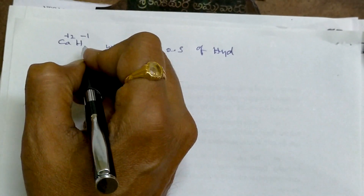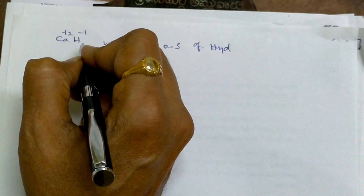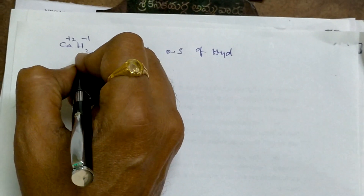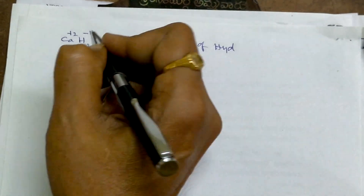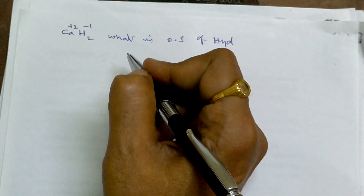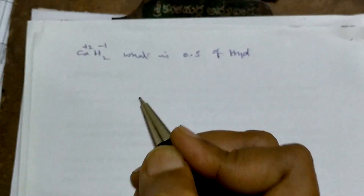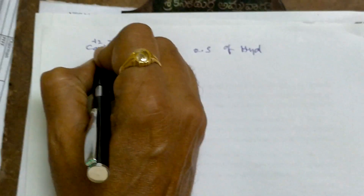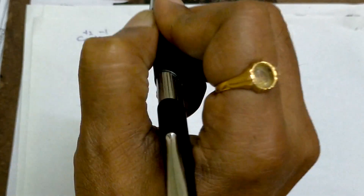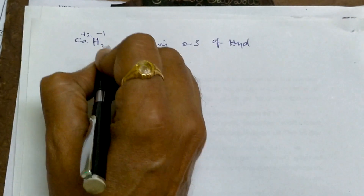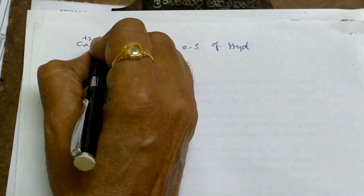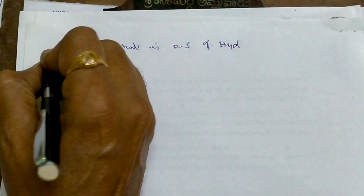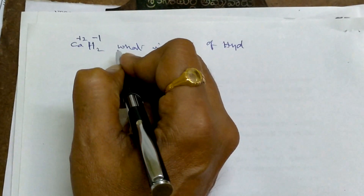Normally hydrogen is plus 1, but if you see the rules — rule number 4 — when it is a metal hydride, like sodium hydride or lithium hydride or calcium hydride, hydrogen is minus 1. So remember, here it is minus 1. Don't get confused with plus 1.